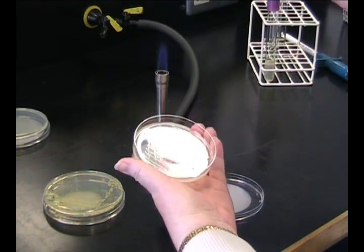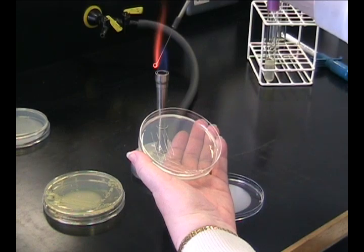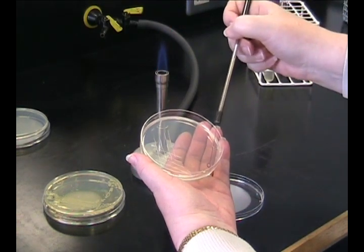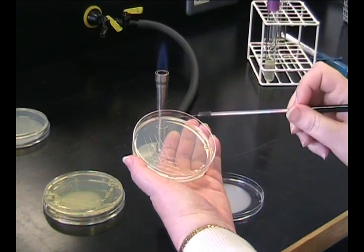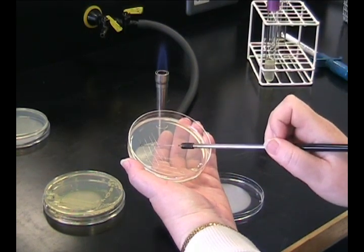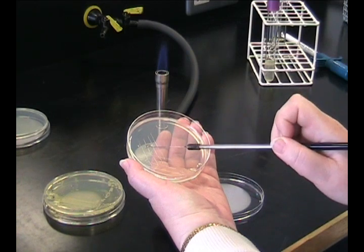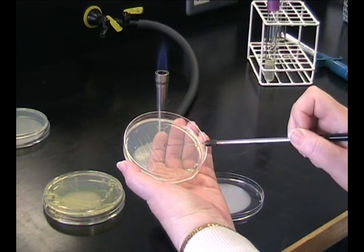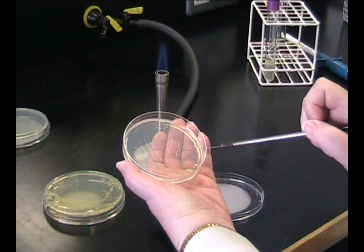At each point where you rotate the plate, you need to cool, flame and cool your loop. By doing this, you are diluting the number of bacteria that are on the loop and therefore reducing the amount of bacteria across the plate. Finish with a streak down the center of the plate.